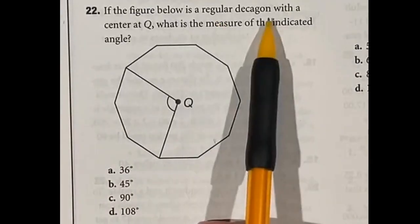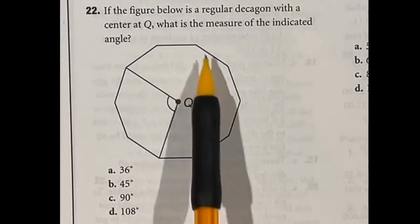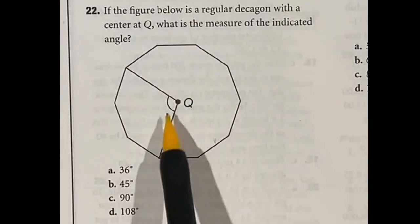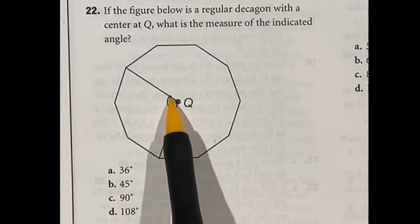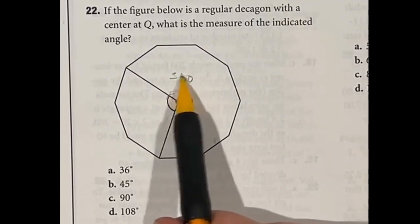So for number 22 we have a regular decagon which means it has 10 sides to this figure and they're all going to be of equal length. Now what it says here is we want to find this angle right here. Well the first thing you need to know is that a full circle is 360 degrees.